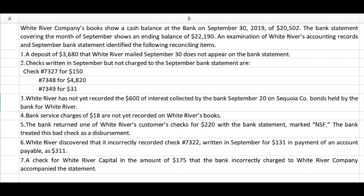Okay, so here's what we got. White River Company's books show a cash balance at the bank on December 30th, 2019 of $20,502. The bank statement covering the month of September shows an ending balance of $22,190. An examination of White River's accounting records and September bank statement identify the following reconciling items. So number one, a deposit of $3,680 that White River mailed on September 30th does not appear on the bank's statement. So we're going to work through all these and do a bank reconciliation on this page right here.